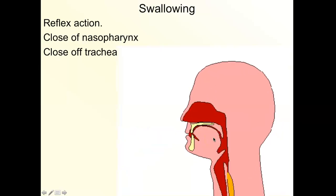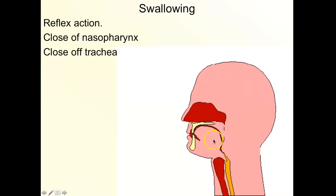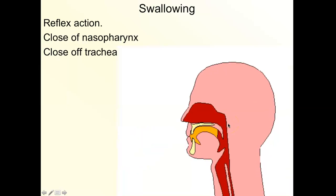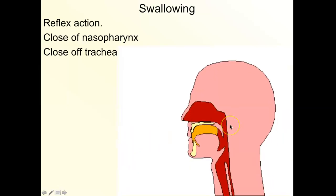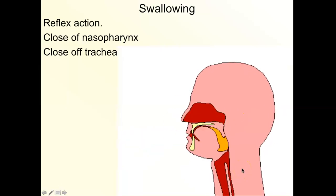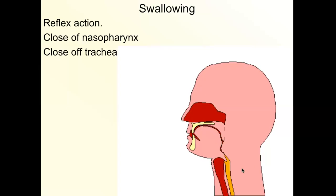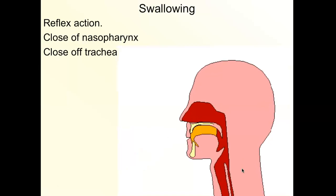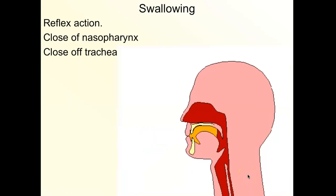That upward motion pushes the epiglottis down, closing off the glottis, so food has no choice but to go down the esophagus. Up top, the tongue moves upward and pushes the soft palate to completely block the passageway into the nasal cavity, trapping food to go down the esophagus. This reflex action can be interrupted by laughing, coughing, or sneezing while swallowing, which can cause food to enter the nasal cavity or trachea.